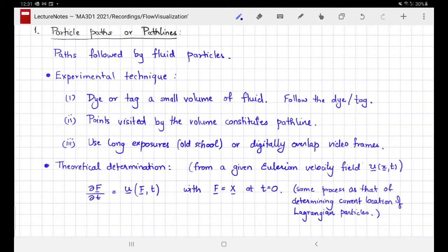Now let's look at particle paths or path lines in detail. These are simply the paths followed by fluid particles. Their theoretical determination is straightforward if you are given an Eulerian velocity field. You solve this differential equation where the current location has a rate of change equal to the current velocity, starting with some initial location. The same process used for determining motion of Lagrangian particles can be used for determining the path lines.